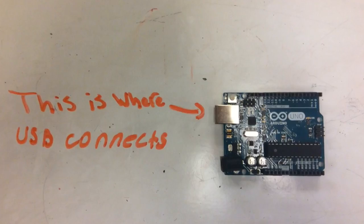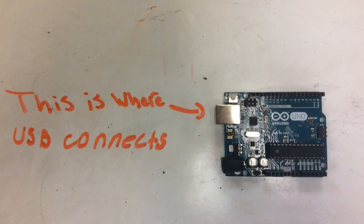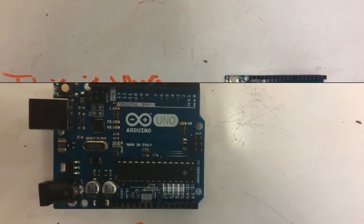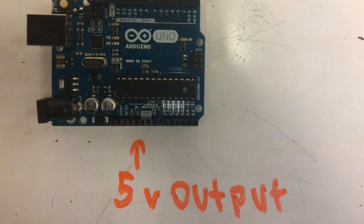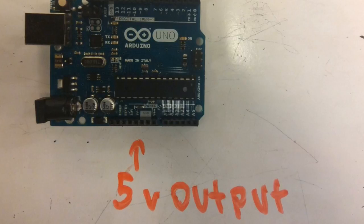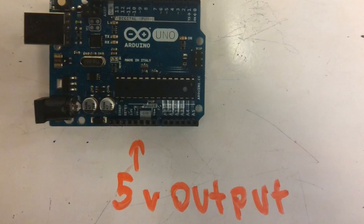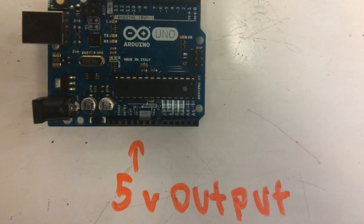The little silver box is where the USB goes into the Arduino for power. The 5-volt pin is a little square with '5V' next to it, and it constantly outputs 5 volts to the circuit.